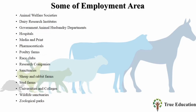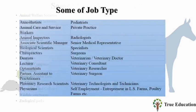Some Employment Areas: Animal Welfare Societies, Dairy Research Institutes, Government Animal Husbandry Departments, Hospitals, Media and Print, Pharmaceuticals, Poultry Farms, Race Clubs, Research Companies, Sanctuaries, Sheep and Rabbit Farms, State Farms, Universities and Colleges, Wildlife Sanctuaries, Zoological Parks, Poultry Farms.